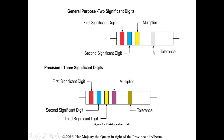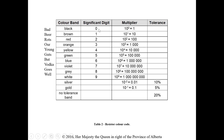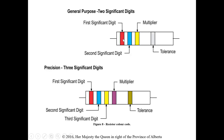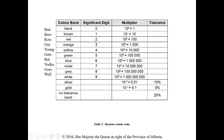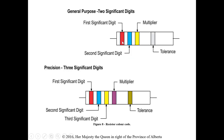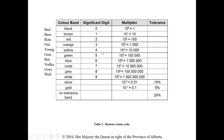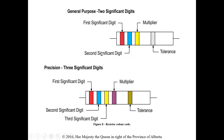The color chart gives you a significant digit attached to each color. For a general purpose resistor — if the first band is red (2) and the second is blue (6), that gives 26. If the multiplier is yellow, the value would be 26,000. The only difference with a precision resistor is the third significant digit. Make sure you know whether it's precision or general purpose when answering a question.